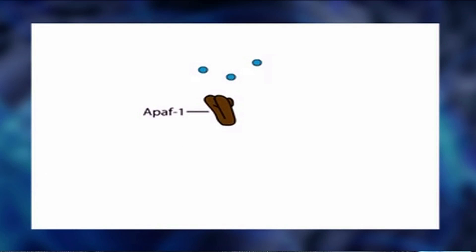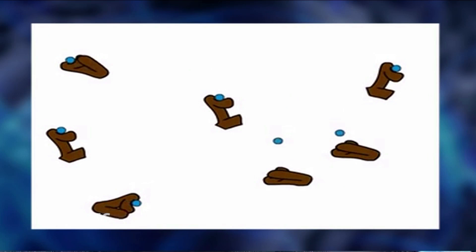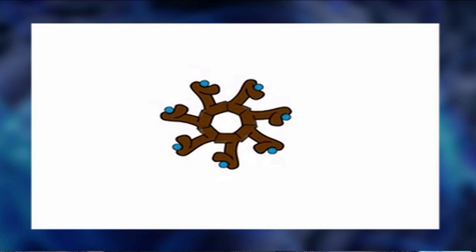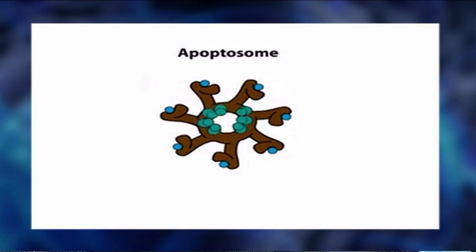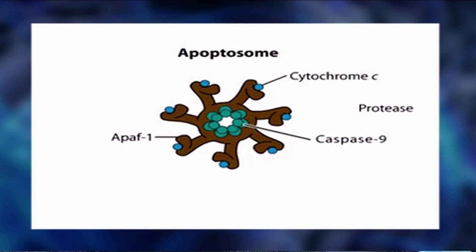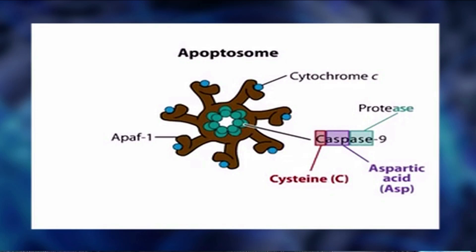Nearly all cytochrome C molecules present in all of a cell's mitochondria can be released from an apoptotic cell in as short as 5 minutes. Release of pro-apoptotic mitochondrial proteins such as cytochrome C is the point of no return — an event that irreversibly commits the cell to apoptosis. Once in the cytosol, cytochrome C forms part of a multi-protein complex called the apoptosome, which also includes several molecules of pro-caspase-9, activated by joining the complex without requiring proteolytic cleavage.